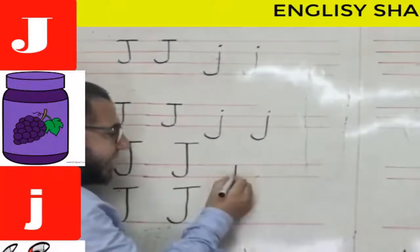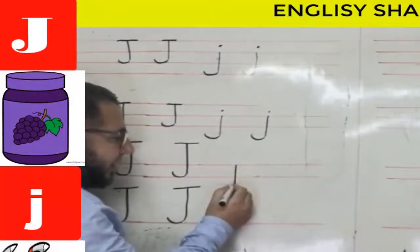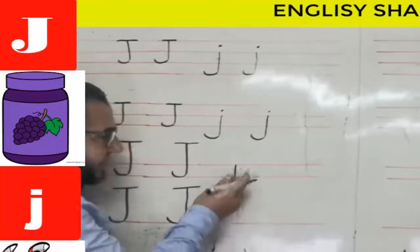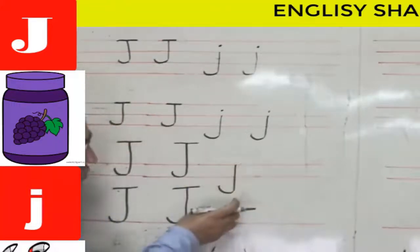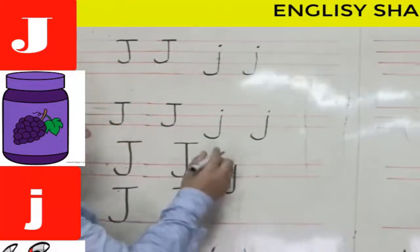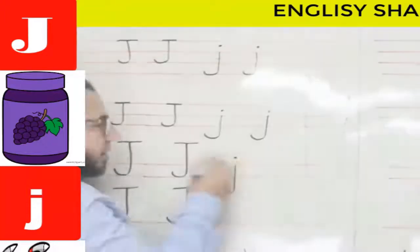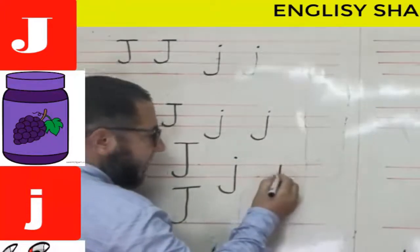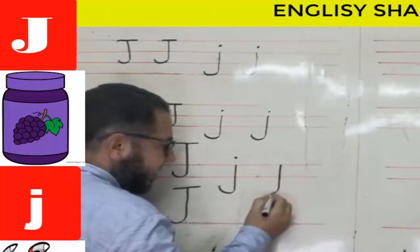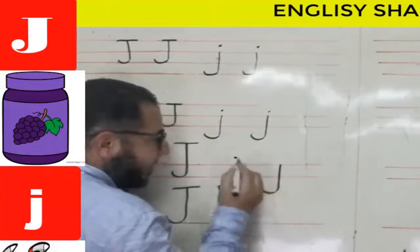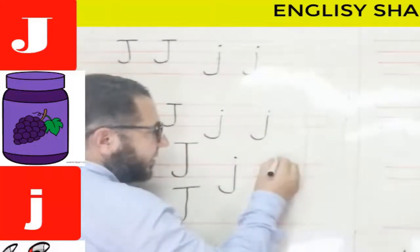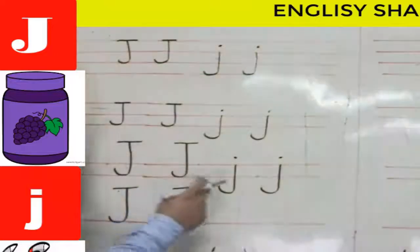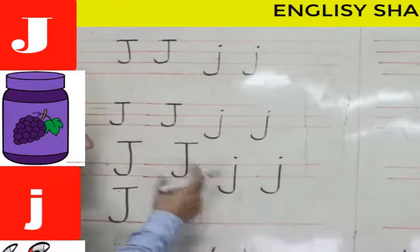When writing lowercase j on two lines, I start at the first line, go down the second line — the small j goes down both lines — then put a dot. Again: start at the first line, go down to the second line, curve at the bottom, and put a dot. That's a small j.